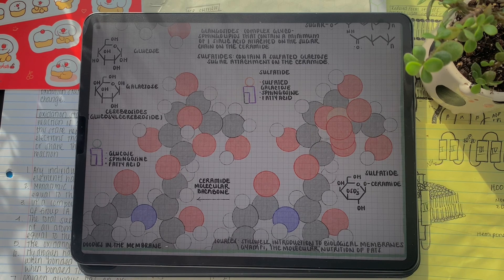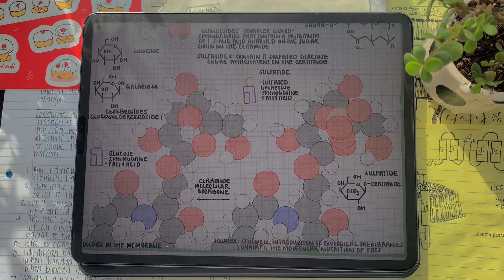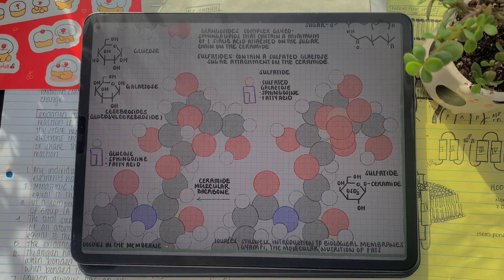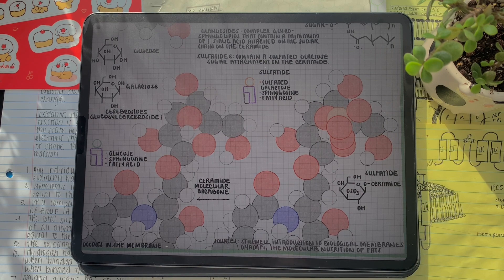Starting with our first example of glycosphingolipids, cerebrosides are one sugar molecule, commonly glucose or galactose, attached to the first carbon of the ceramide through a glycosidic bond.